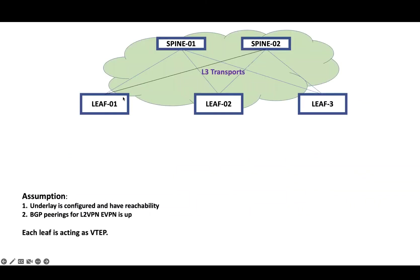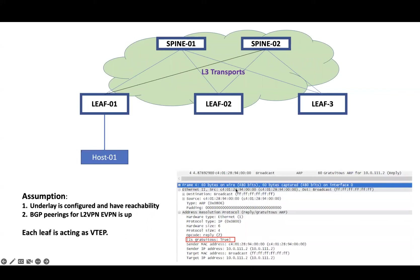Now let's understand a bit more about control plane learning. Let's say the underlay is up and running, and we have configured BGP EVPN between devices and peers are in an established state. When any host comes up, it will send a GARP to inform that it is here. GARP is a gratuitous ARP notification used to update others about its MAC address and IP address.